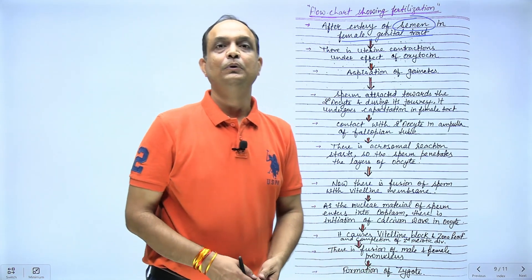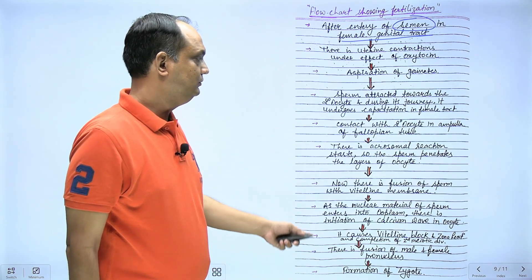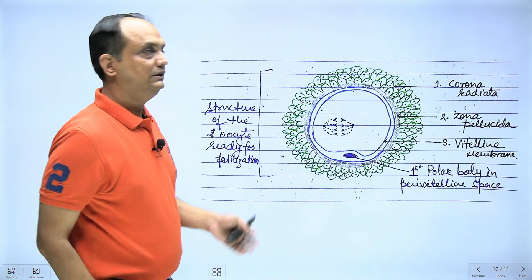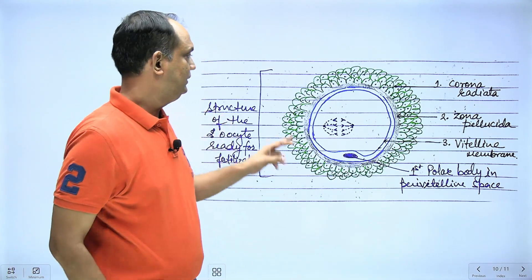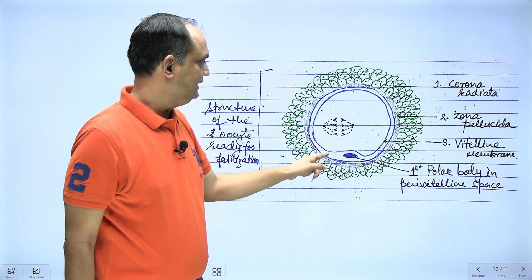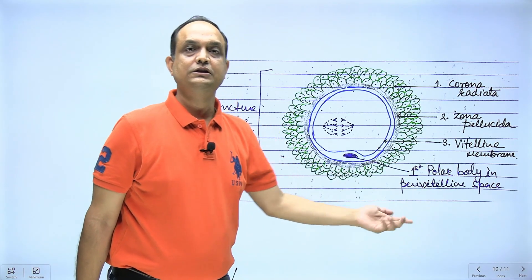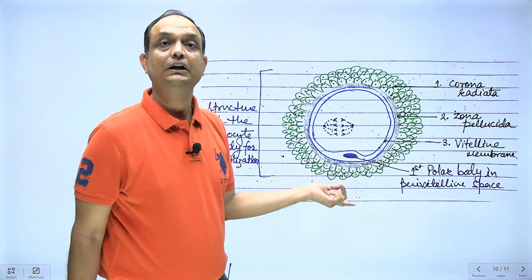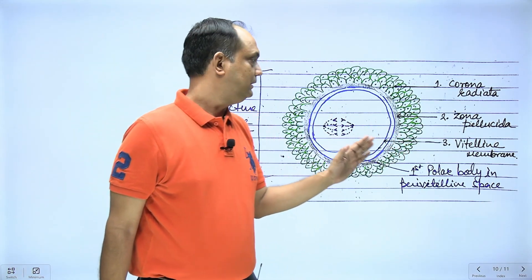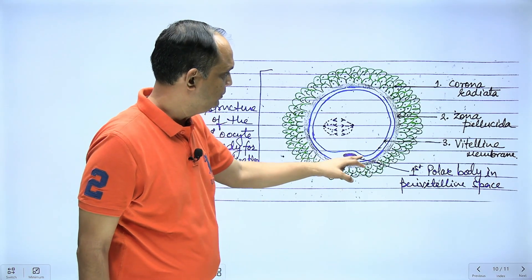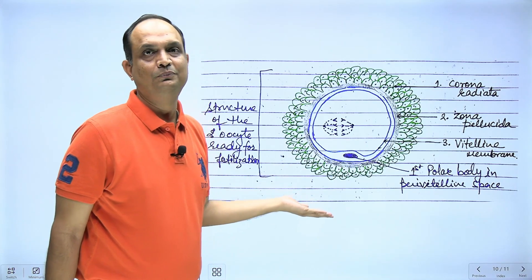The acrosomal reaction helps penetrate all three barriers. After piercing the three barriers, the head of the sperm's plasma membrane fuses with the vitelline membrane, stimulating the calcium wave. The calcium wave changes the property of the vitelline membrane and zona pellucida to avoid polyspermy. Then there is fusion of the male and female pronuclei, forming a diploid zygote. In the perivitelline space, more than one polar body is present after fertilization completes the second meiotic division.